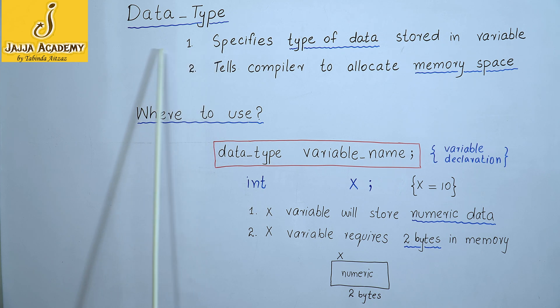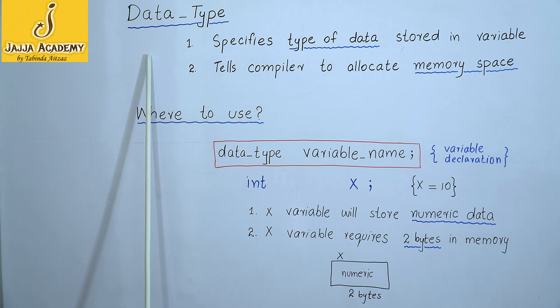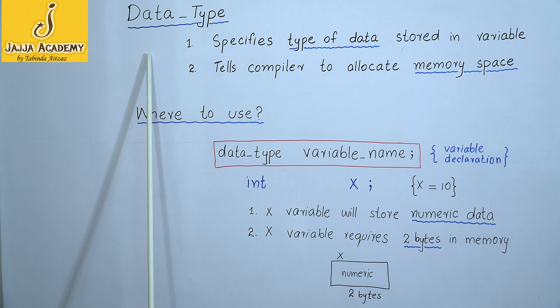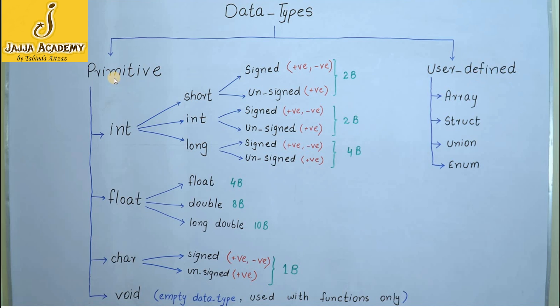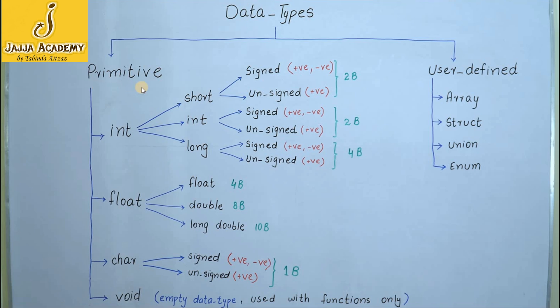Now let's discuss the different types of data types used in C programming language. Data types have two main categories: number one is primitive data type, and the other is user-defined data type. First, we will discuss primitive data type. The primitive data type is further divided into four categories.